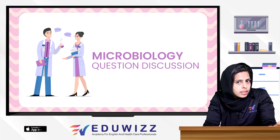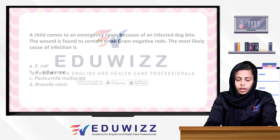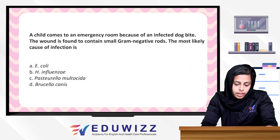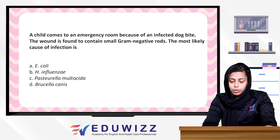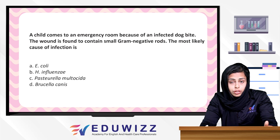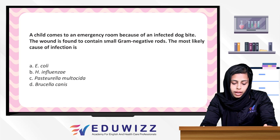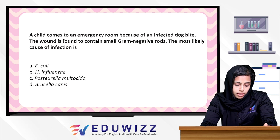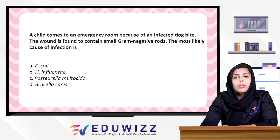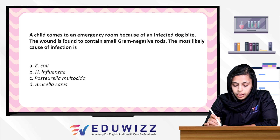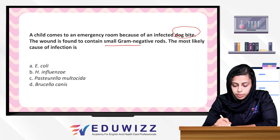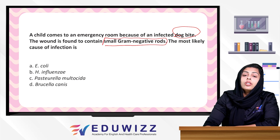First question: A child comes to an emergency room because of an infection — an infected dog bite. The wound is found to contain small gram-negative rods. The most likely cause of the infection is: E. coli, Haemophilus influenzae, Pasteurella multocida, or Brucella canis. We are going to discuss a dog bite here and small gram-negative rods.